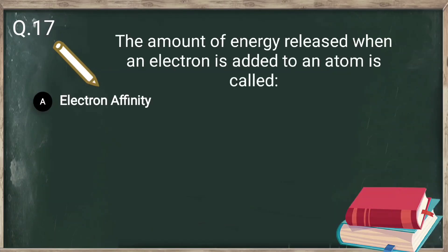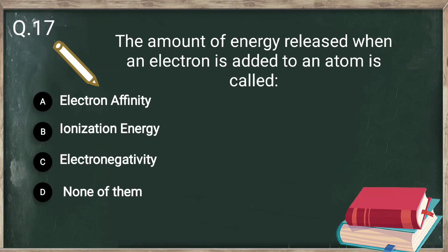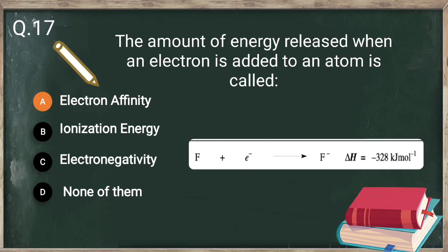Question number 17: the amount of energy released when an electron is added to an atom is called electron affinity. When we add an electron to any atom, the amount of energy released is known as electron affinity. For example, in the case of fluorine, when one electron is added, 322 kilojoules per mole of energy is released.